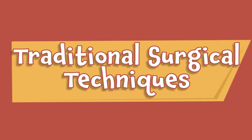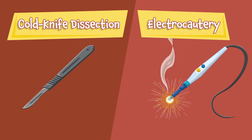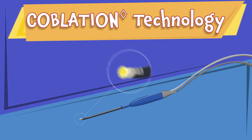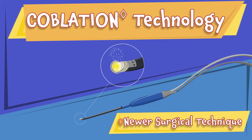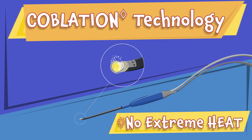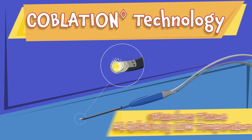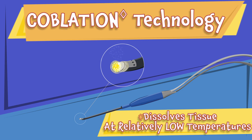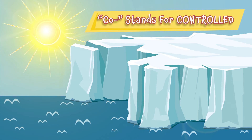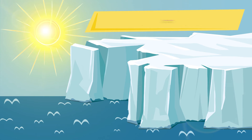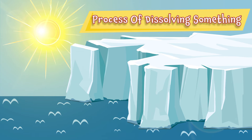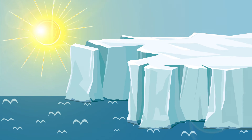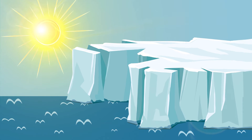Traditional surgical techniques for tonsillectomy are electrocautery and cold knife dissection. Coblation technology is a newer surgical technique. Rather than using extreme heat to cut tissue, coblation technology dissolves tissue at relatively low temperatures. "Co" stands for controlled, and "blation" comes from the word ablation, which is the process of dissolving something — for example, when the sun melts an iceberg, the process is called ablation.